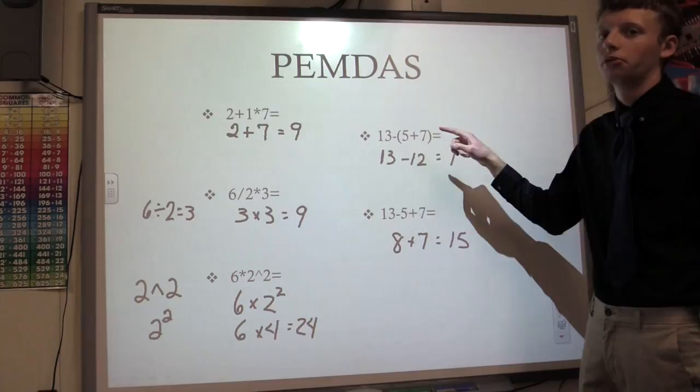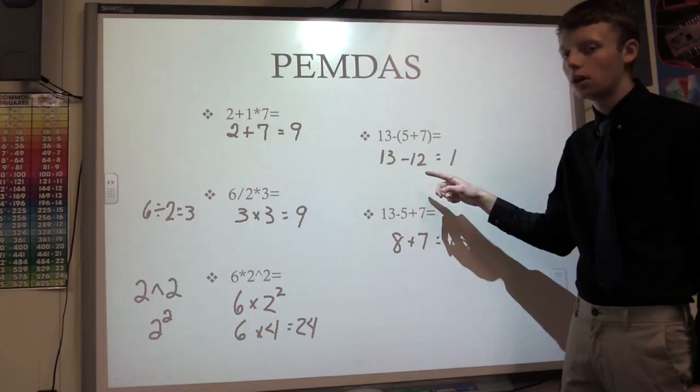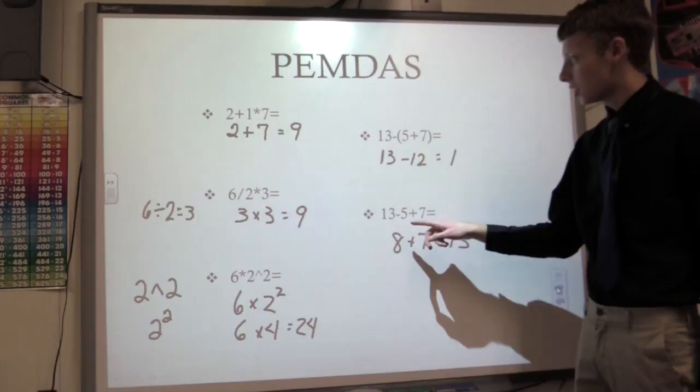For this equation, the parentheses are always done first. So we're going to add 5 and 7 to give us 12. Then we're going to do 13 minus 12, and our answer is 1.